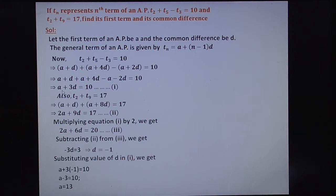Substituting the value of D in equation 1, we get: What is the first equation? A plus 3D equals 10. In place of D, substitute minus 1. You get A plus 3 times minus 1 equals 10. A minus 3 equals 10. A equals 13.